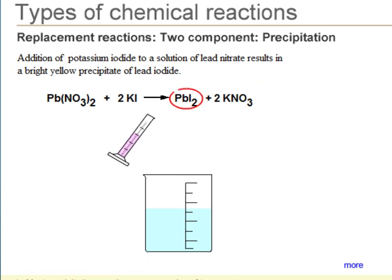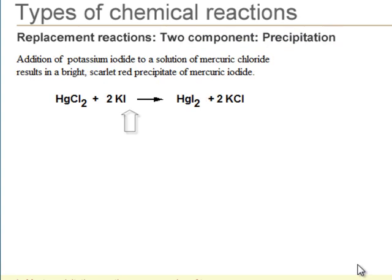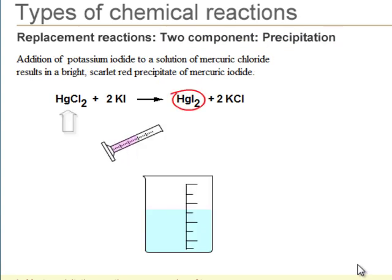This precipitation reaction is also a two-component replacement reaction. Hence, both lead nitrate and potassium iodide are replaced. In this reaction, both mercury chloride and potassium iodide undergo replacement.